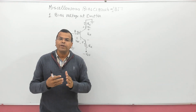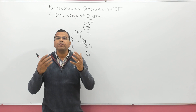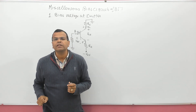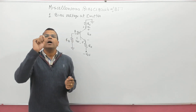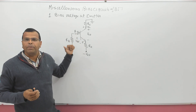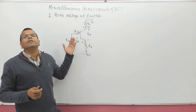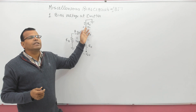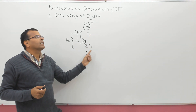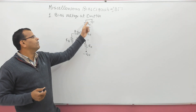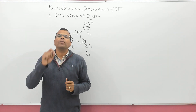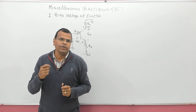Instead of coming to the numerical directly, my aim is to let you know how to analyze the circuit. In BJT circuits, in most cases, the approach of analysis is: we apply KVL in the base circuit, get the base current, assume it is in active region, then find IC by IC = beta × IB, then apply KVL in the collector circuit to get the voltage VCE.